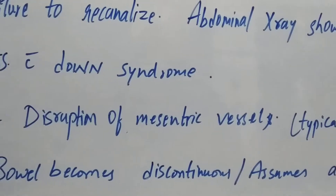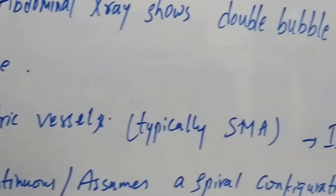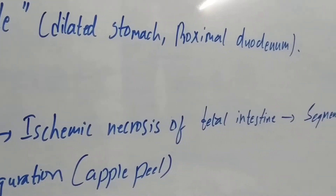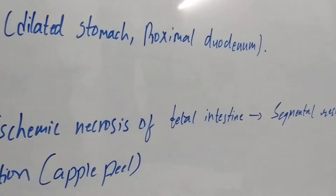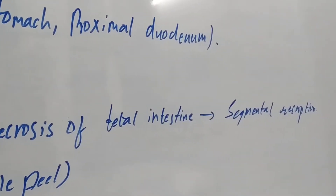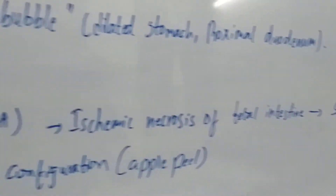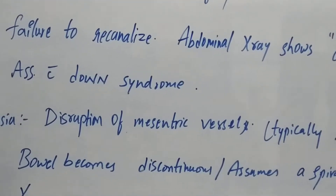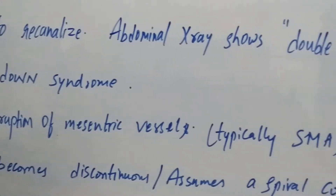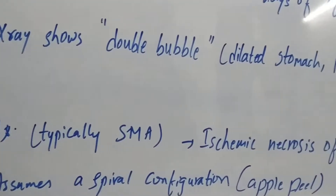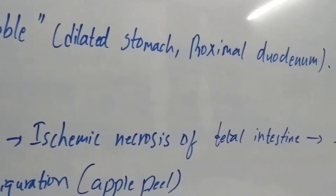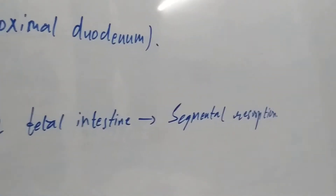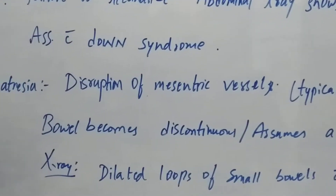Jejunal and ileal atresia is a disruption of mesenteric vessels, typically the superior mesenteric artery, causing ischemic necrosis of the fetal intestine that ultimately leads to segmental resorption.